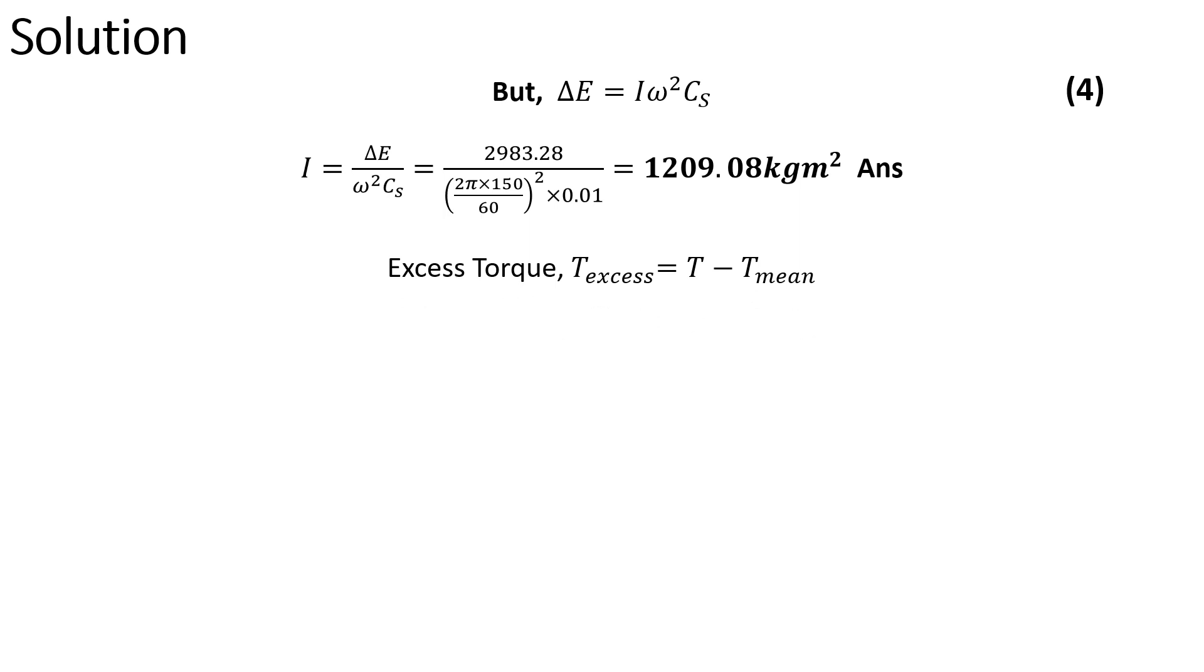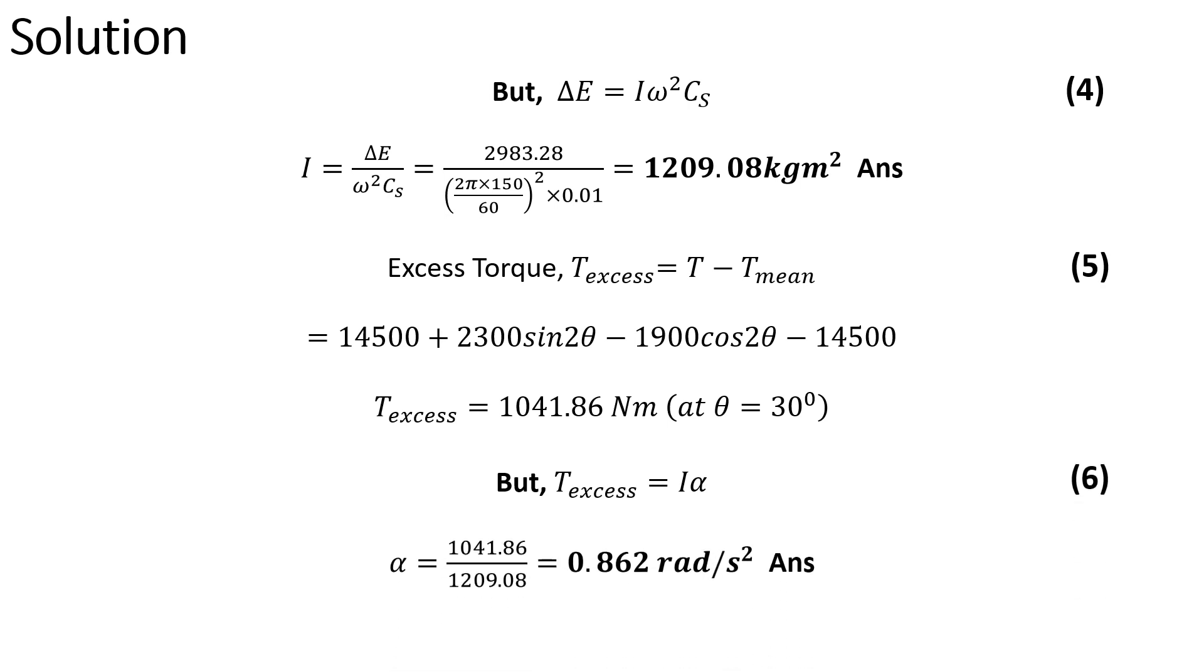We also know that excess torque is given by the difference between the torque and the mean resisting torque. When we plug in the values, we get the excess torque at 30 degrees from the inner dead center equal to 1041.86 newton meter. We also know that excess torque equals moment of inertia times the acceleration. The acceleration, when we plug in the values, equals 0.862 radians per second squared, and that is our answer.